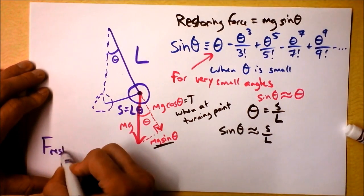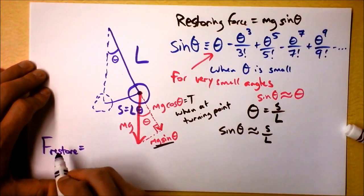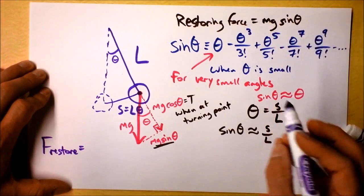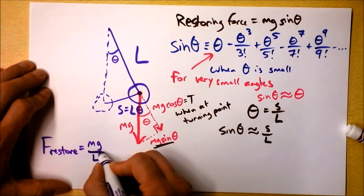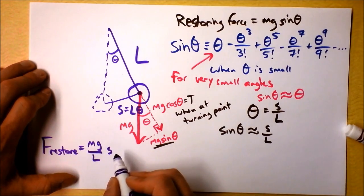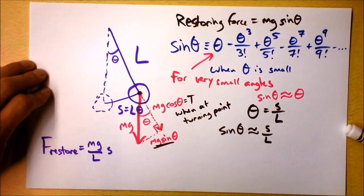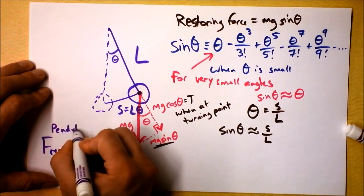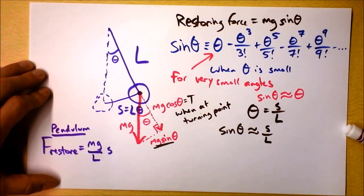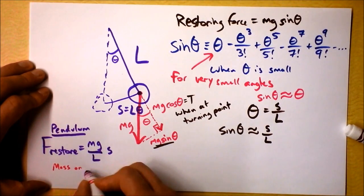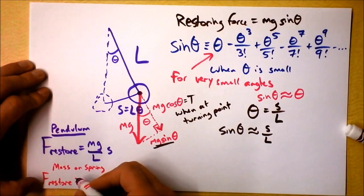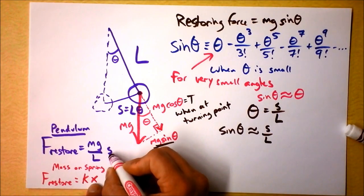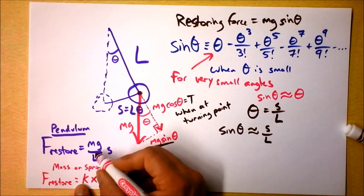And then we can write the restoring force again. F restore. In this case, we said that the restoring force is M times G times sine of theta. But now we're saying sine of theta is s over L. So I'm going to write it as M times G divided by L times s. And this restoring force has a similar form. This is the restoring force for a pendulum and for a mass on a spring. F restore, I'm not talking about which direction it is, I'm just talking about magnitude. It's the spring constant times X.